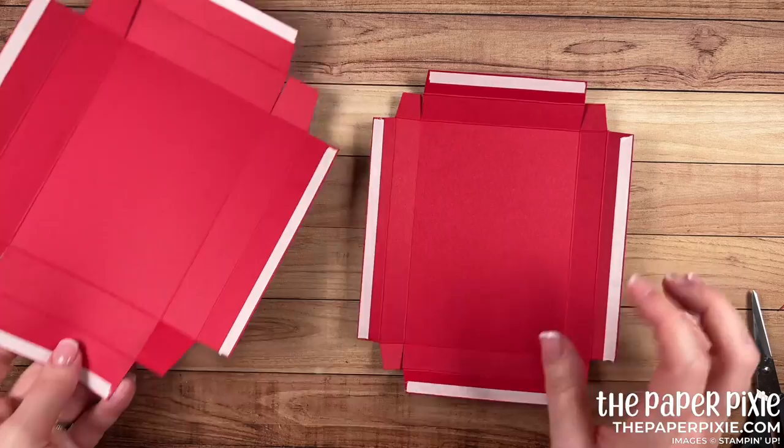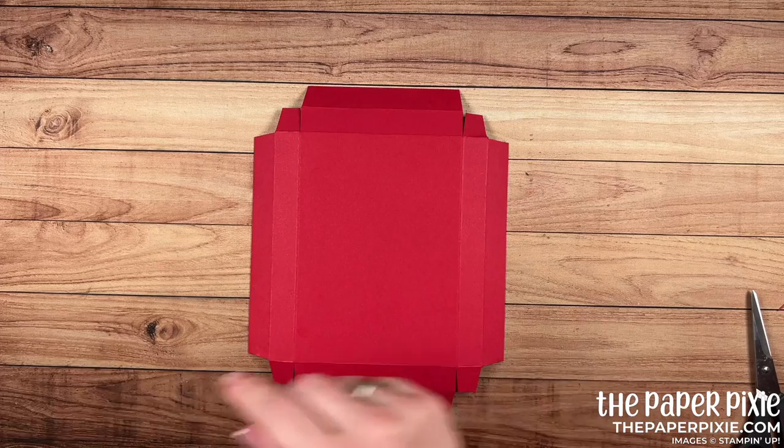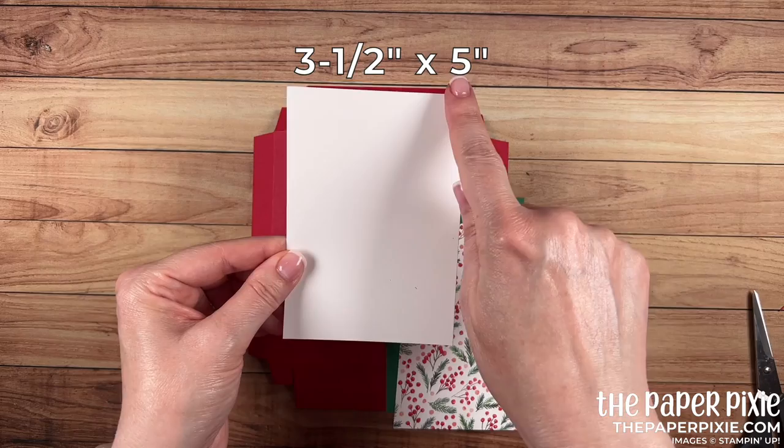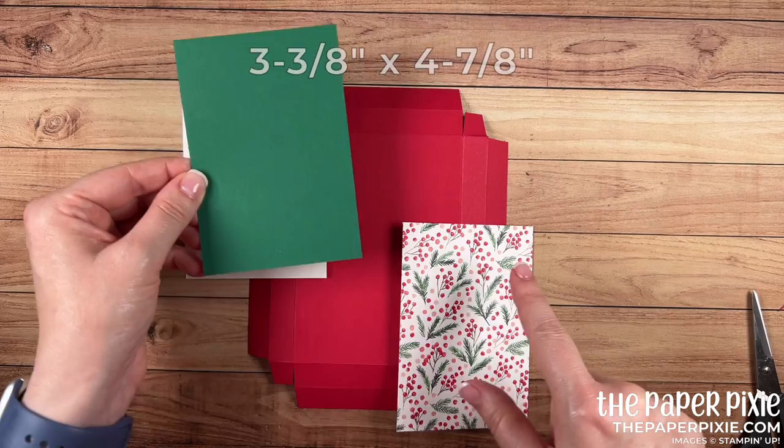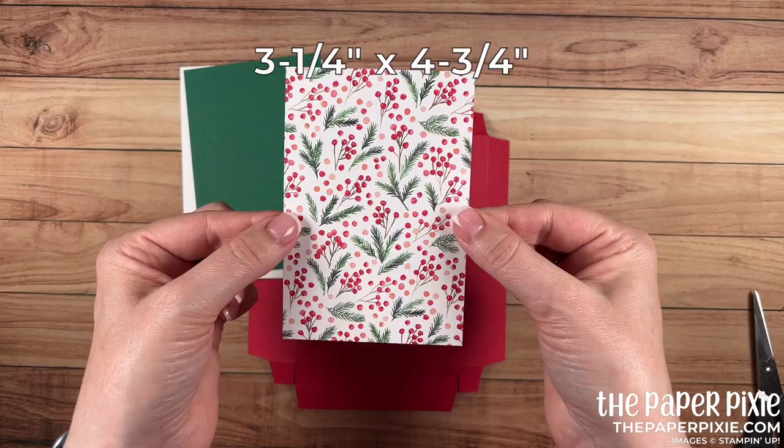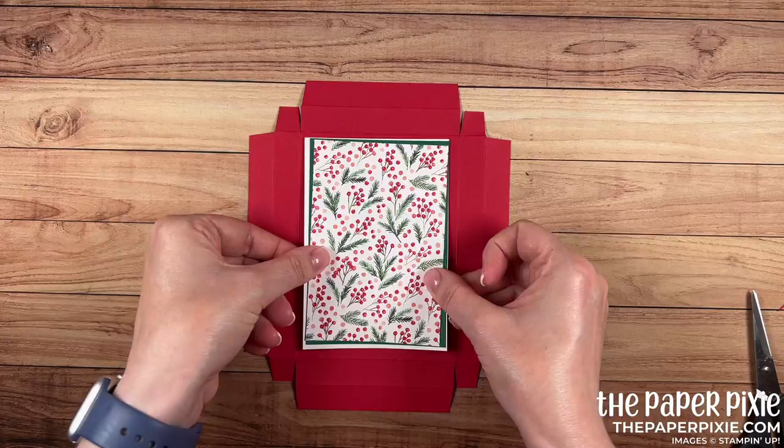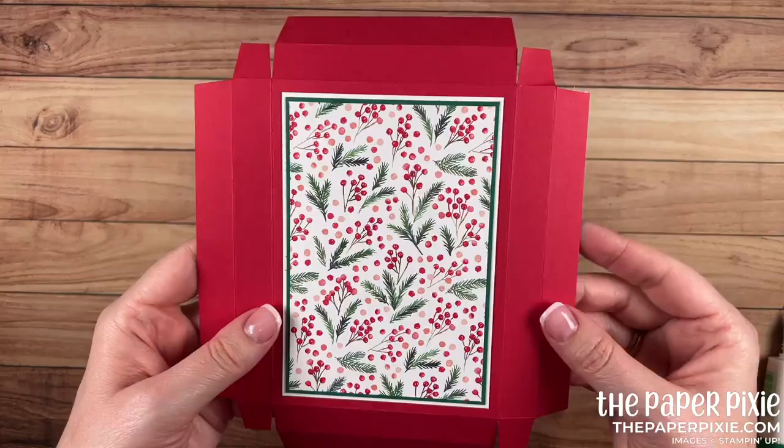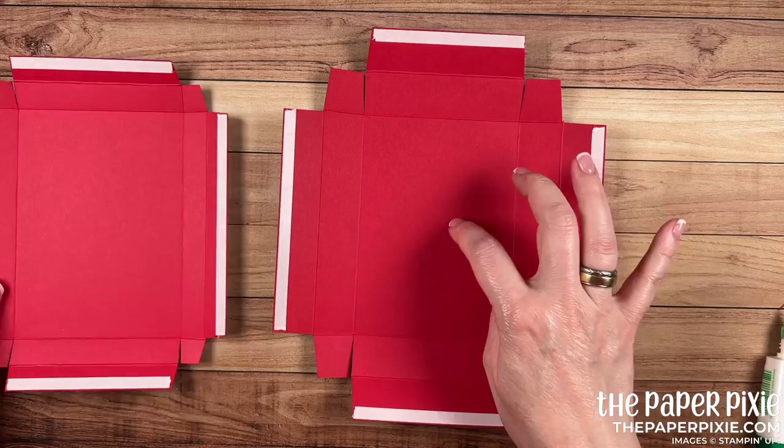All right we've done all of that and I recommend just burnishing or pressing on all these tear and tape backings. Now before we start to put these together we're going to add some paper to the lid of our box. Now remember the lid is the smaller one of these pieces and I've got three pieces of paper that we're going to adhere together. Basic white measures 3 1/2 by 5. Shaded spruce measures 3 3/8 by 4 7/8 and the painted Christmas piece is 3 1/4 by 4 3/4 which I recommend being in portrait if you have a directional pattern. I'm going to glue these three layers together and then glue it to the lid of the box. There we go and I love that pop of basic white behind those layers.